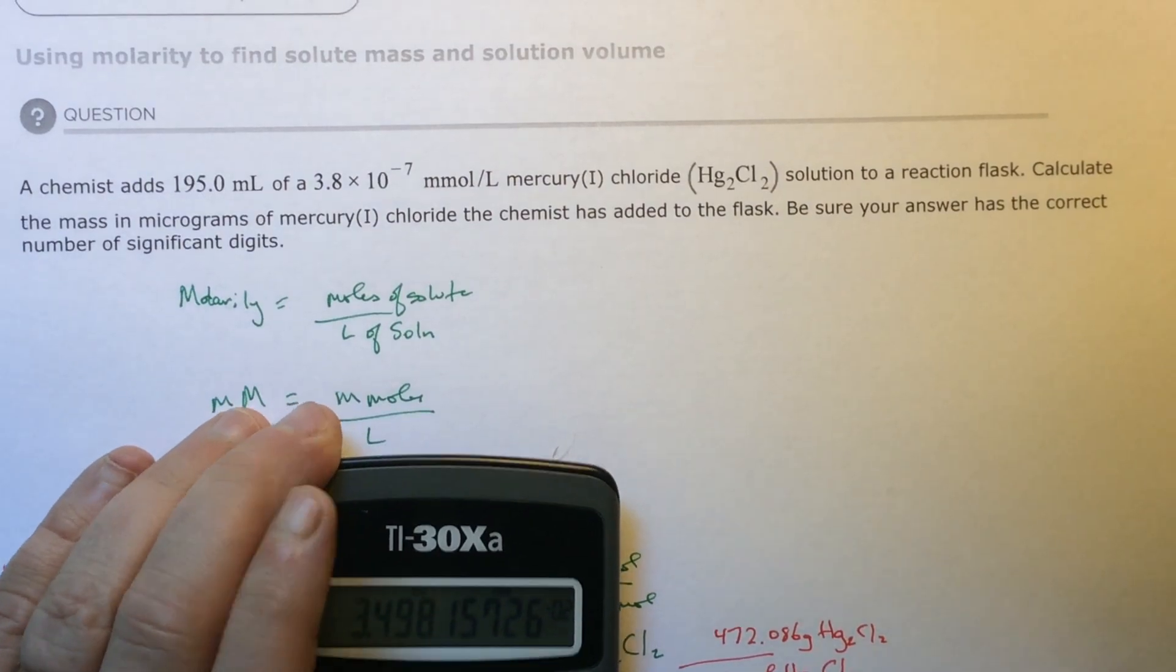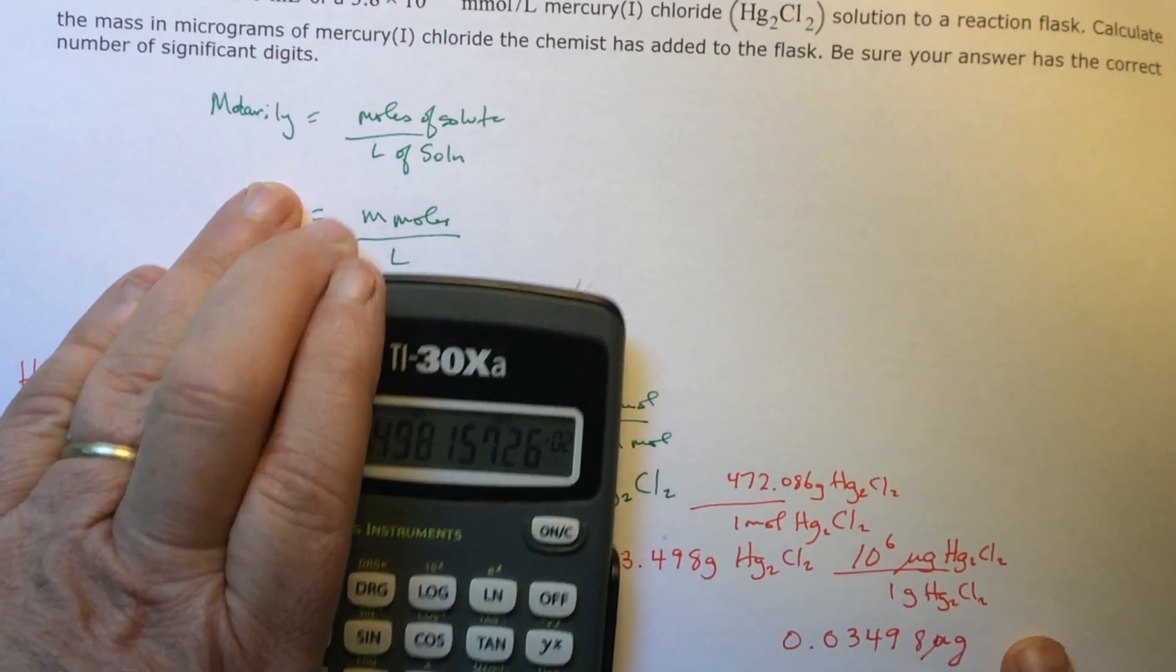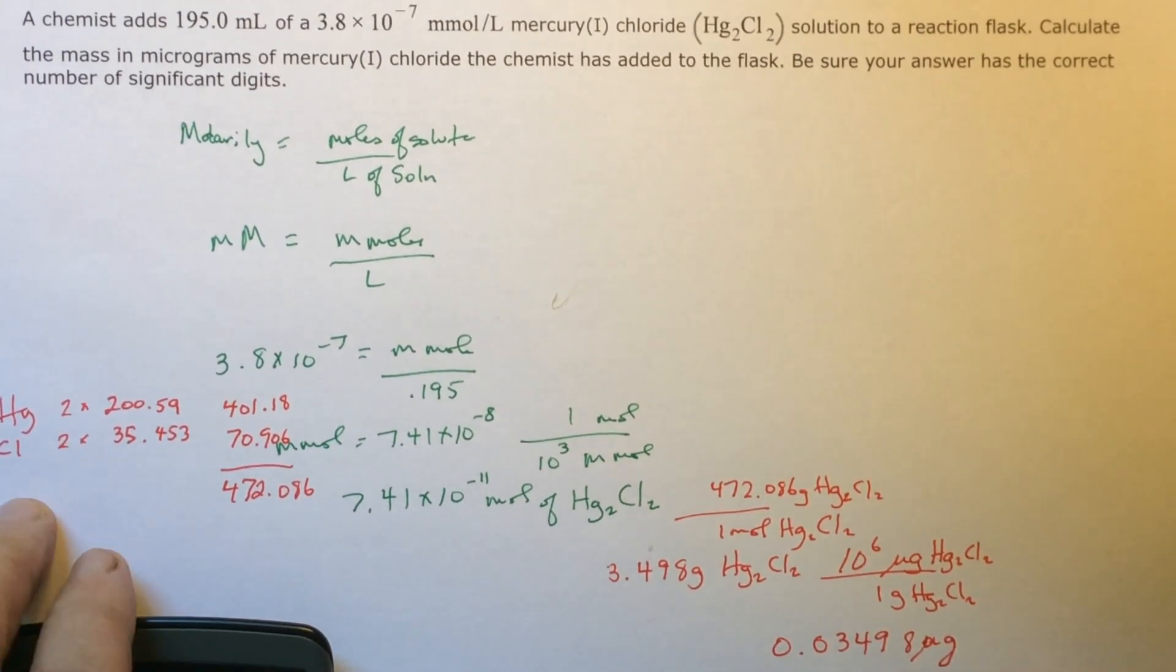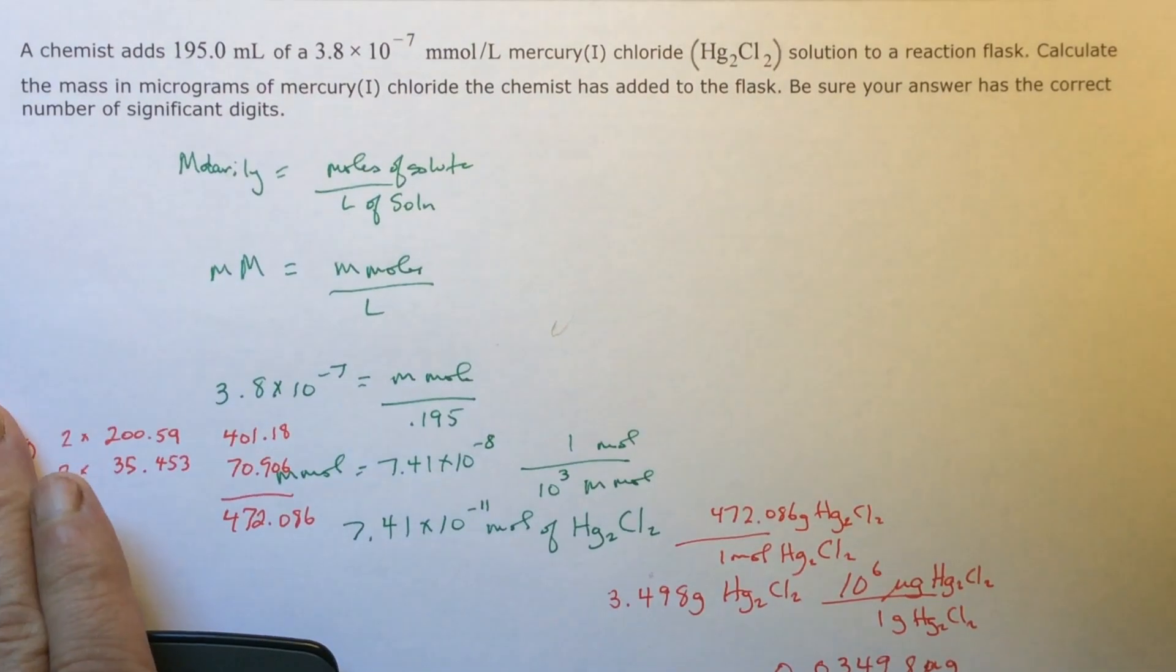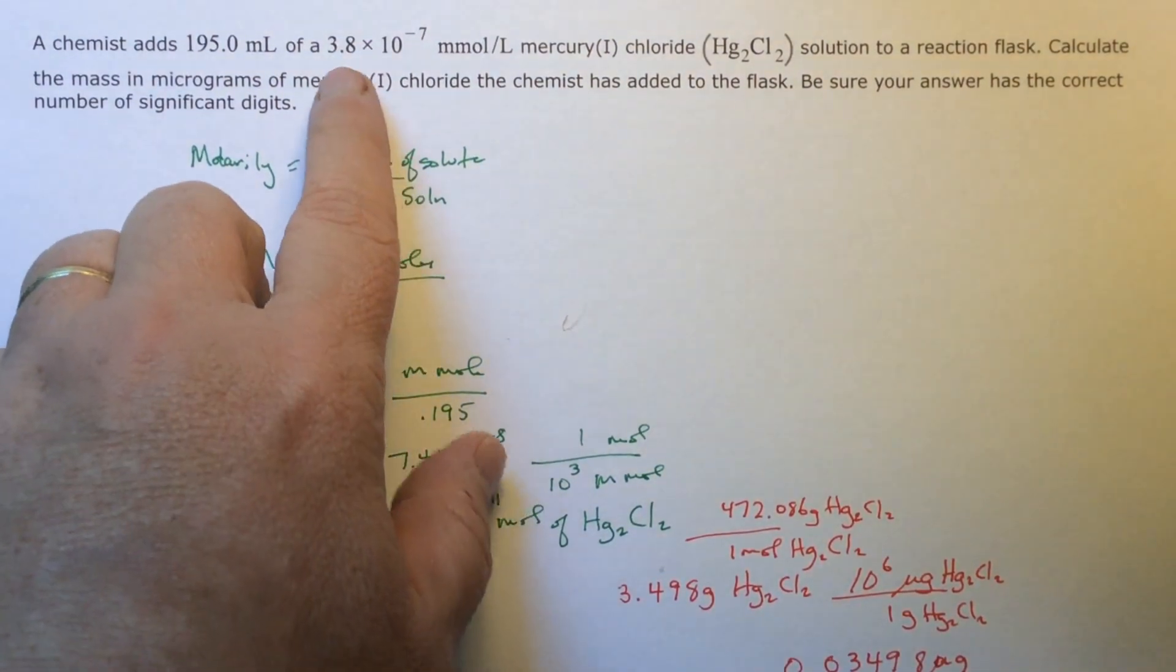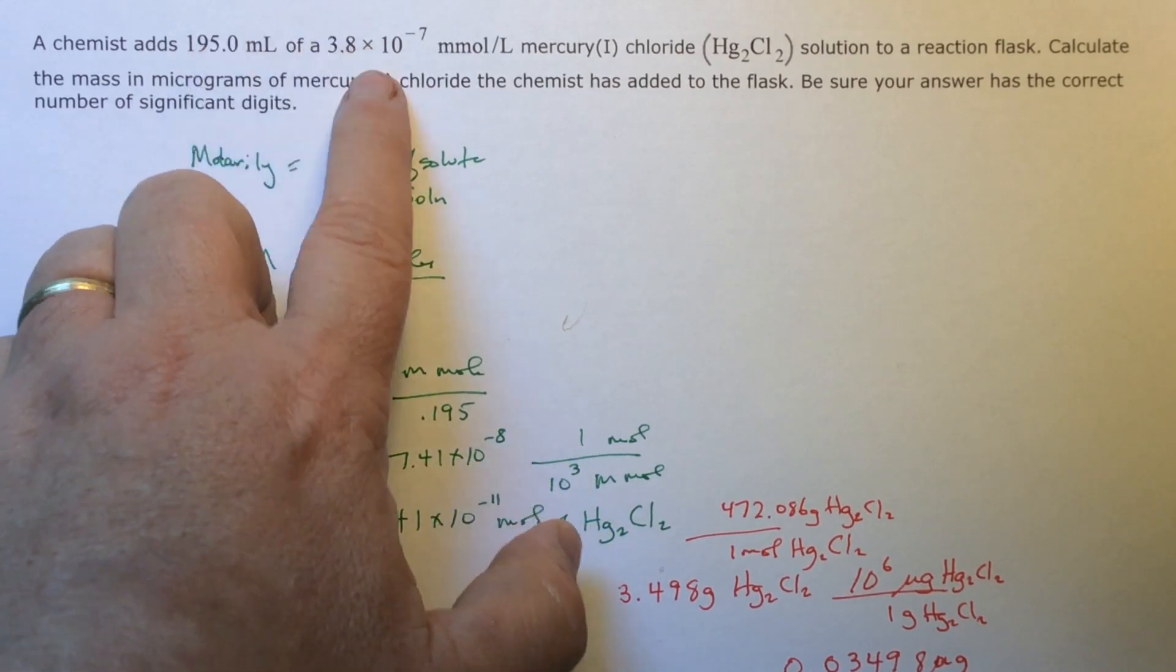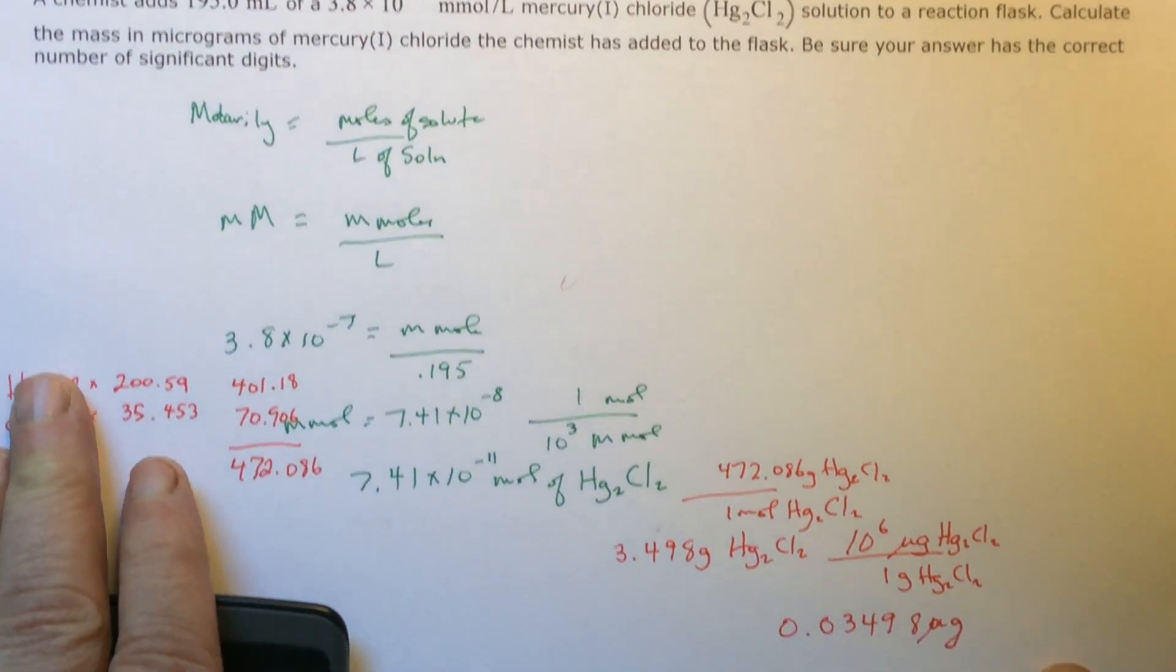But I need to go back and check. Sorry, I need to go back and see what I was given. This is 2 significant digits. So this is 4. So I need to round to 2 significant digits.